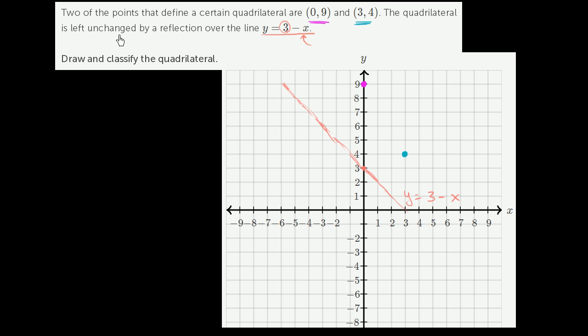So the quadrilateral is left unchanged by a reflection over this. That means if I were to reflect each of these vertices, I would essentially end up with one of the other vertices on it. If those get reflected, you're going to end up with one of these. So the thing is not going to be different. Let's think about where these other two vertices of this quadrilateral need to be.